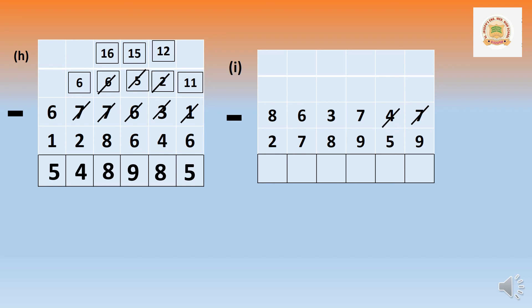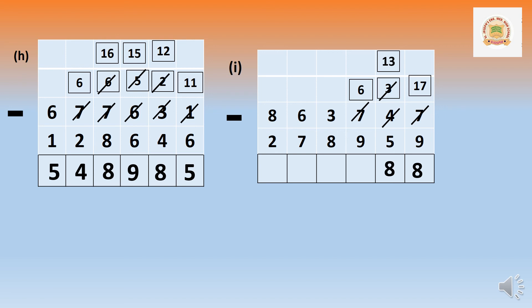In the ones place: 7 cannot minus 9. Borrow from 40 — it gives 10, becoming 17, and the tens become 3. Seventeen minus 9 equals 8. In the tens: 3 cannot minus 5. Borrow from 700 — it becomes 600. The tens become 130. Thirteen minus 5 equals 8.